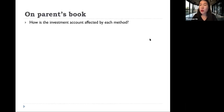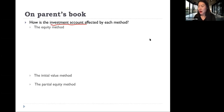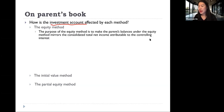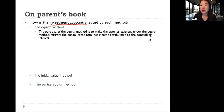Let's look at what we do on the parent's book if there's any Intra-Entity Inventory Transfer. First, the investment account. Depending on the method the parent uses — equity method, initial value method, or partial equity method — the purpose of the equity method is to make the parent's balance mirror the consolidated total net income attributable to the controlling interest.